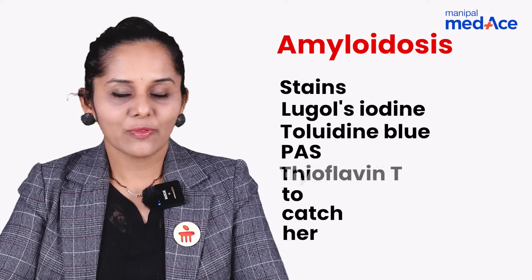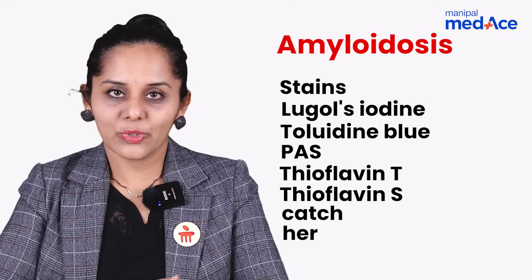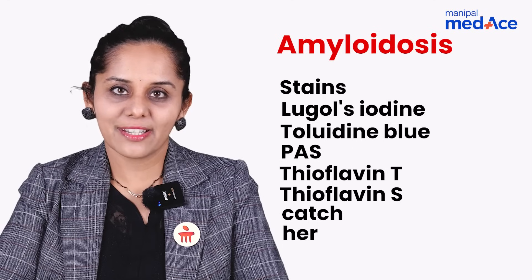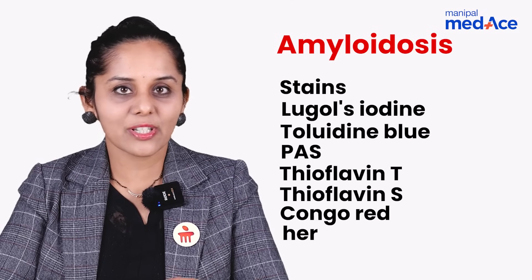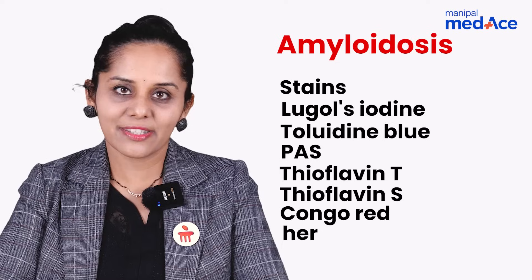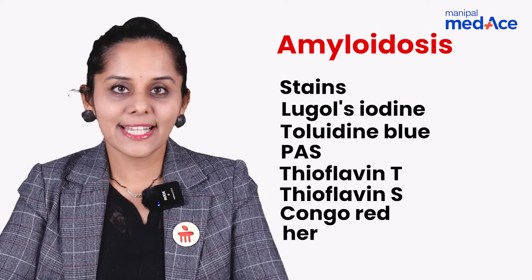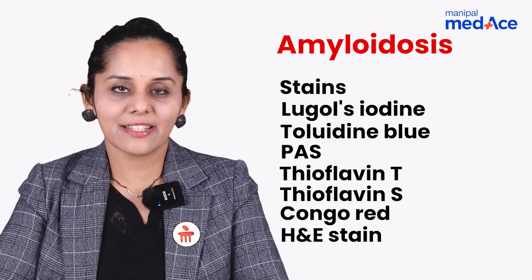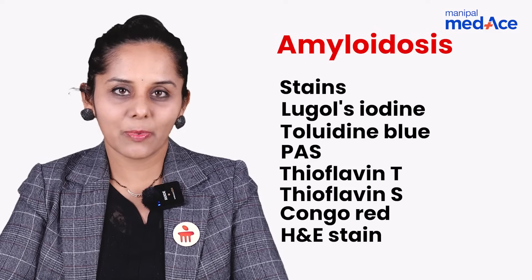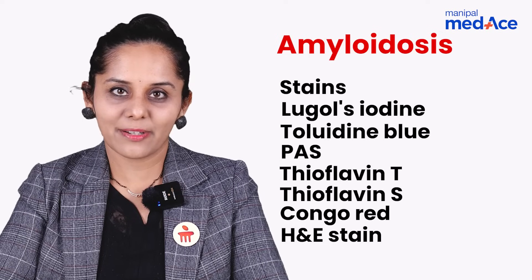Try — Thioflavin T and Thioflavin S — both are special stains for amyloid. C for Congo red, which is widely used and a very important stain in the diagnosis of amyloidosis. H for HND stain, which again stains the amyloid deposits as pale, waxy, extracellular amorphous deposits.